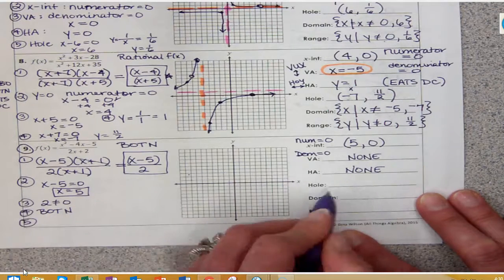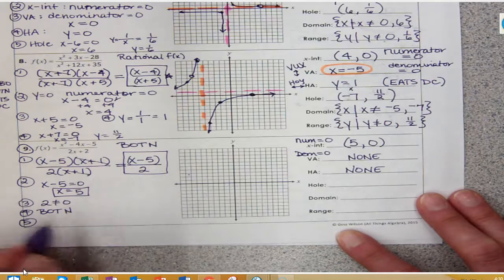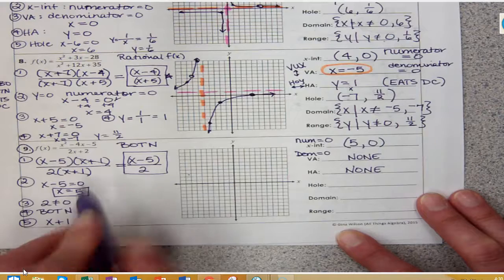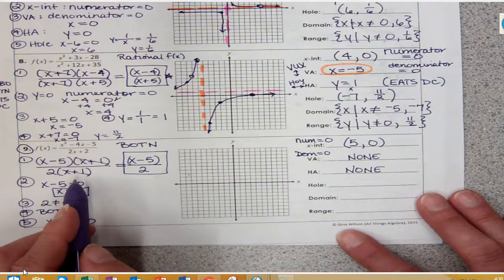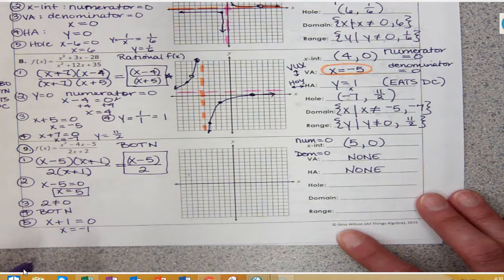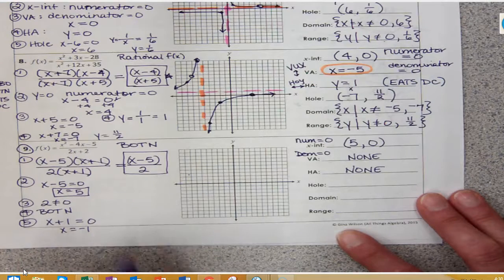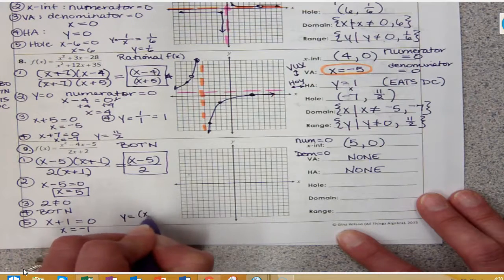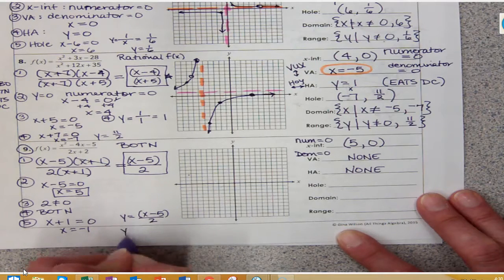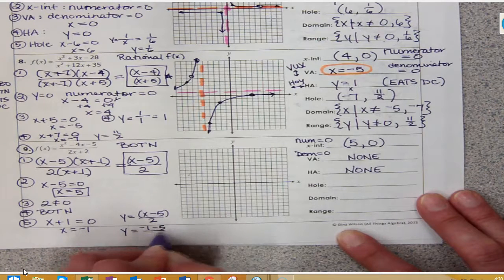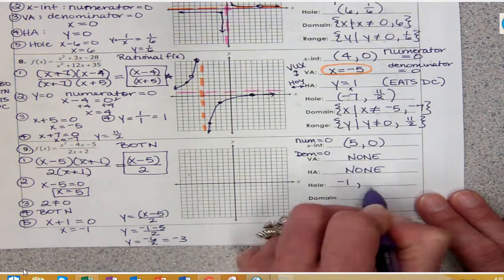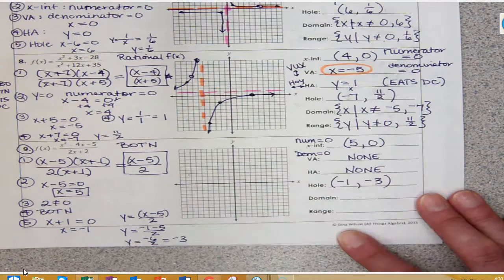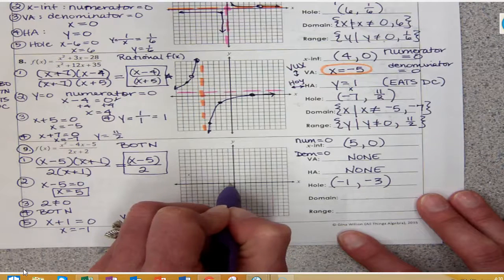Number 5: is there a hole? Yes — (x plus 1) creates a hole. If x were negative 1, the denominator in the original expression would equal 0, which we can't have. To find y at the hole, I plug negative 1 into the simplified equation and get y equals negative 6 over 2, which equals negative 3. So when x is negative 1, y is negative 3 — there's a hole at (negative 1, negative 3).